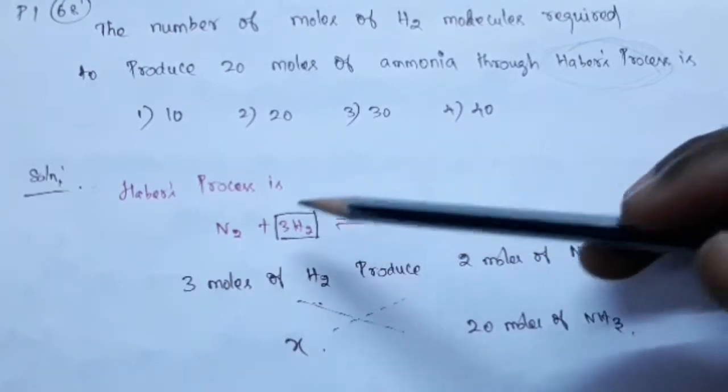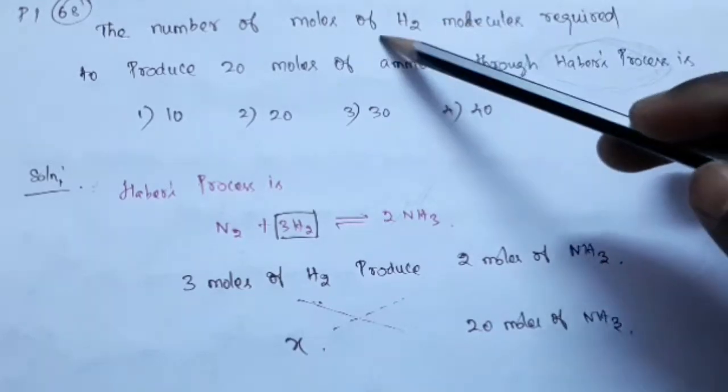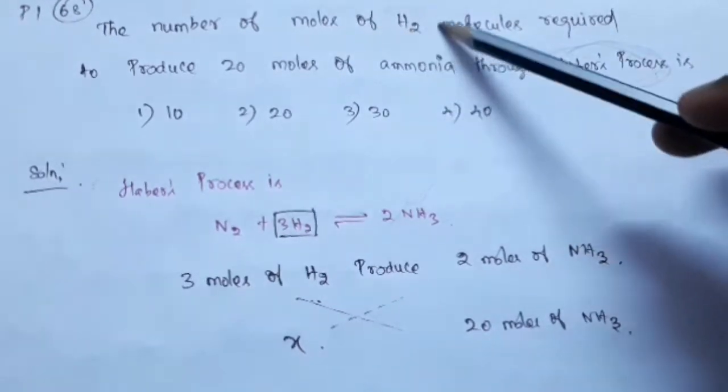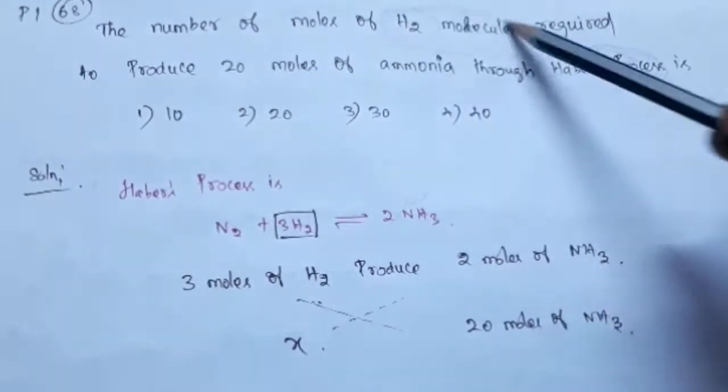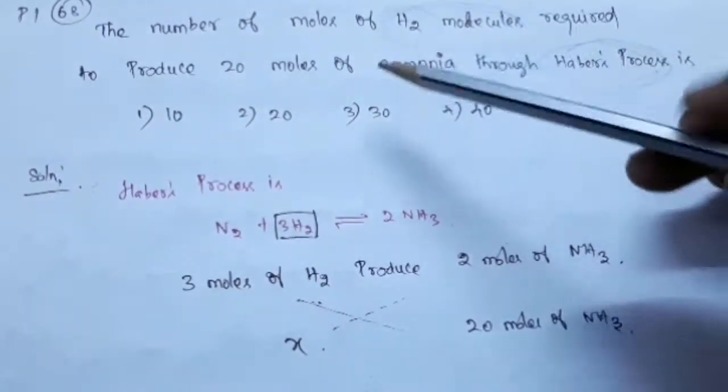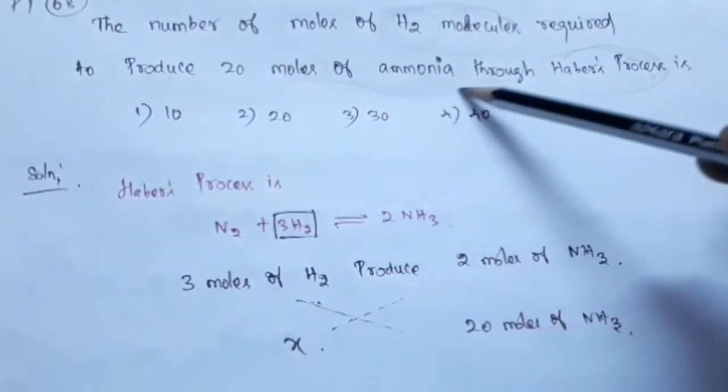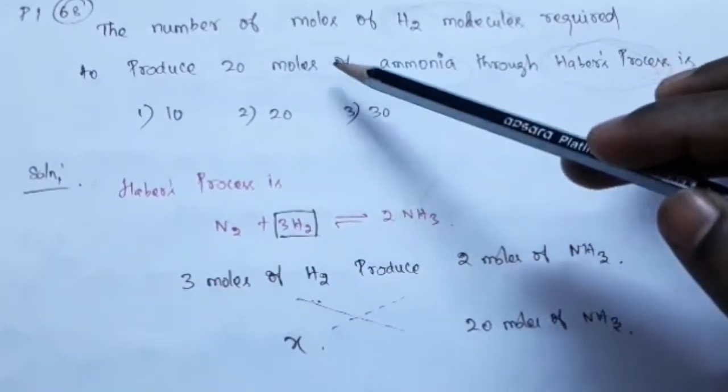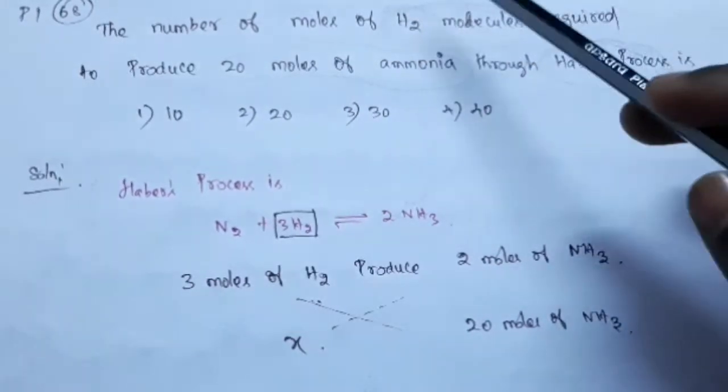Here you see the question is number of moles of H2 molecules. This is important. Number of moles of H2 molecules required to produce 20 moles of ammonia. So for 20 moles, how many H2 molecules are needed?